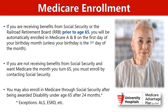If you're not receiving benefits from Social Security and you want Medicare to begin the month that you turn 65, you must enroll by contacting Social Security, usually two to three months prior to turning 65. You can also enroll into Medicare under the age of 65 after being awarded disability under Social Security after 24 months. There are some exceptions, such as ALS or ESRD — you'd want to contact Social Security depending on your circumstances.